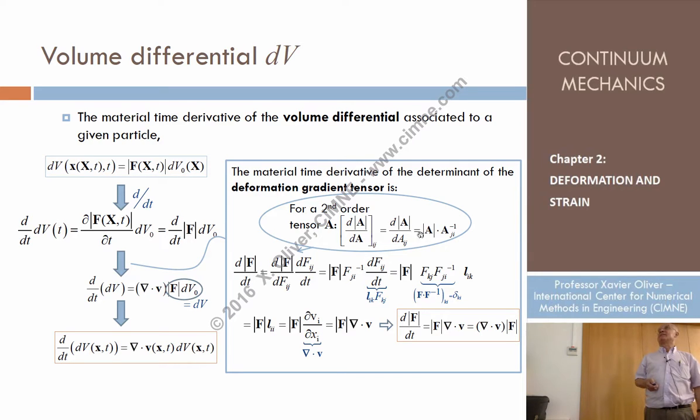Finally, the derivative of the determinant of a tensor with respect to the tensor equals the determinant times the inverse of the tensor transposed. That's a formula that's not proven. By using that formula, we arrive at this very important formula: the material derivative of the determinant of F is the divergence of velocity times the determinant of F. And the time derivative of the spatial differential of volume is the divergence of velocity times the differential volume.